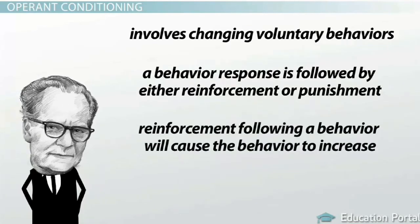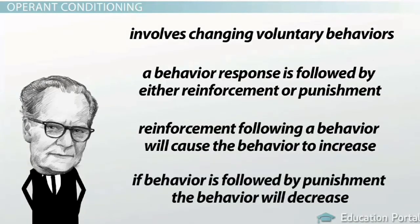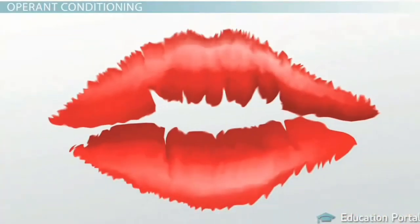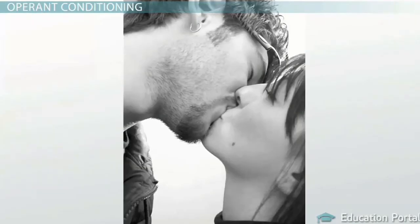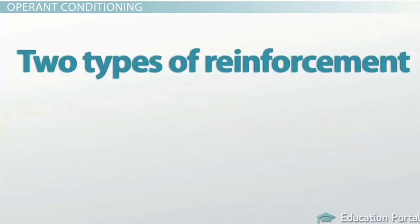Reinforcement following a behavior will cause the behavior to increase, but if a behavior is followed by punishment, the behavior will decrease. Going back to the kiss example, if the person put their arms around you and kissed you back enthusiastically, that would be an example of reinforcement and would probably increase the likelihood that you would seek another kiss from that person.